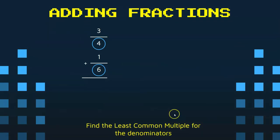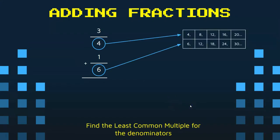What we're going to have to do is we're going to have to find the least common multiple for the denominators. So what I do is I take the four and I take the six, I go off to the side, and I find the first five multiples of each number.